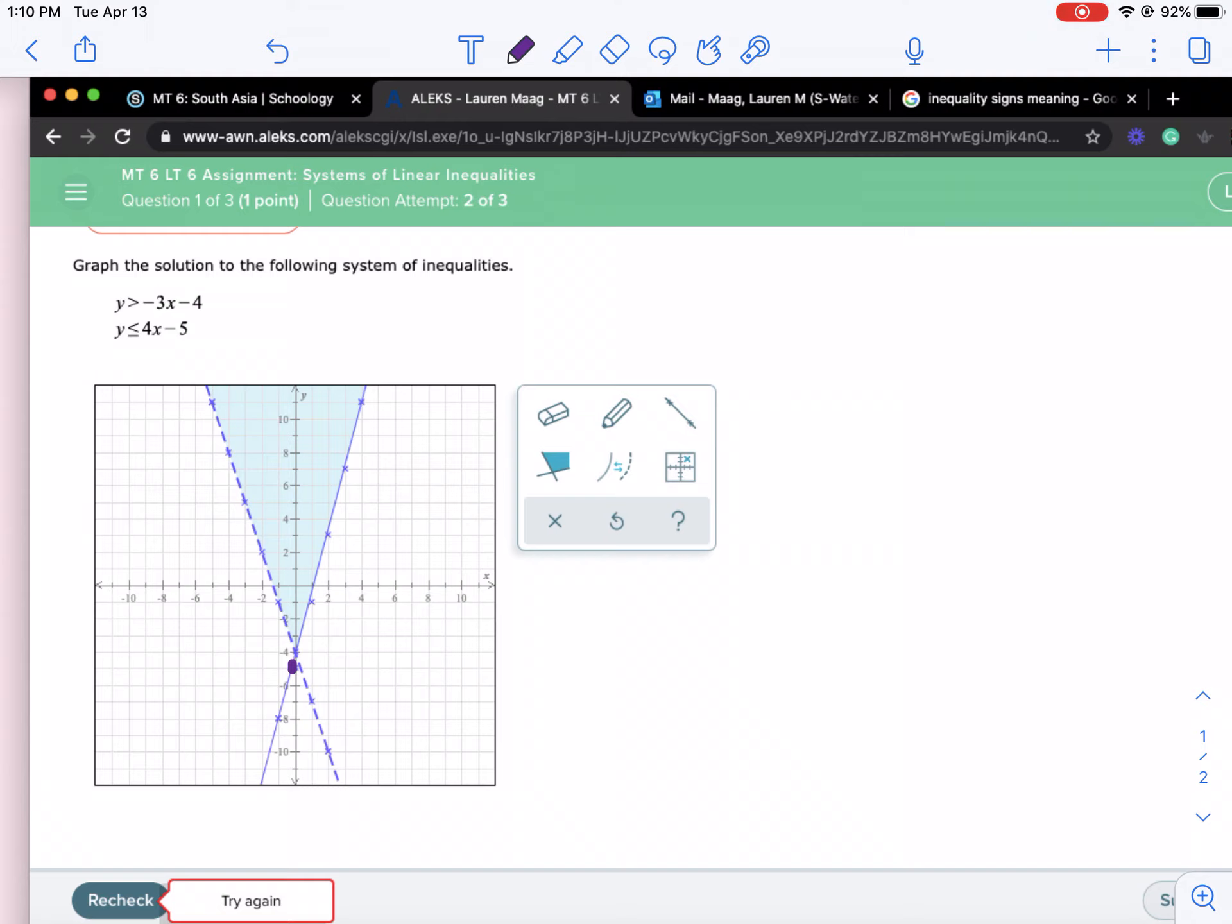And then it has a slope of 4, so you go up 4 and over 1. So my line should be looking like that, the thick line there.